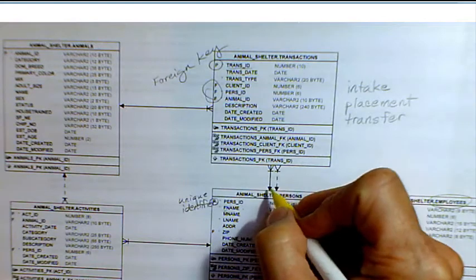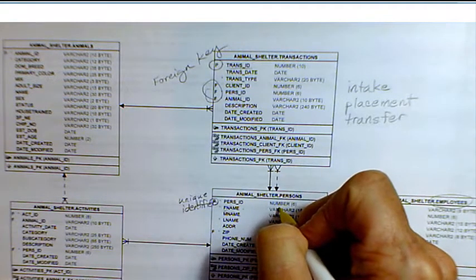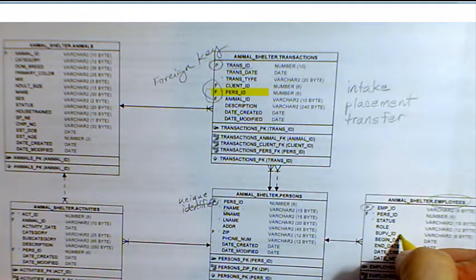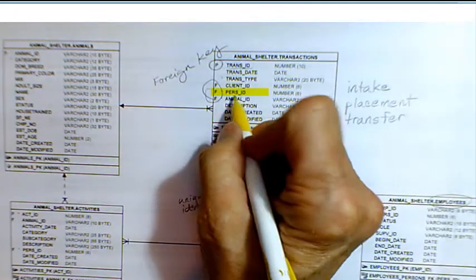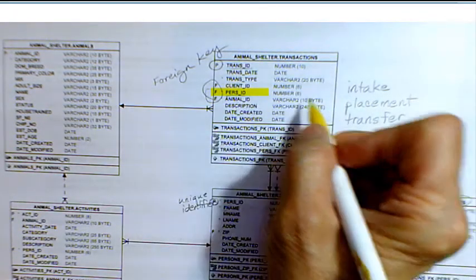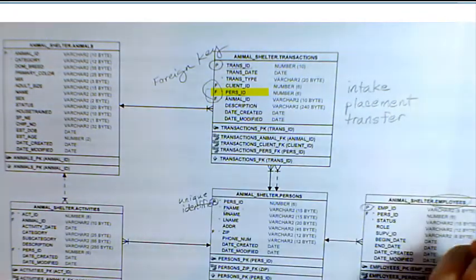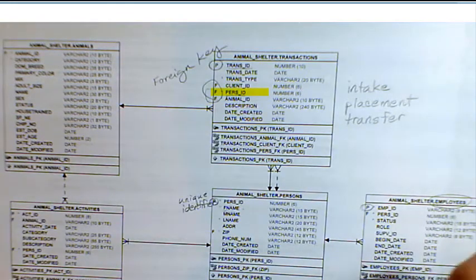If we look at the persons table, one of these persons, who's classified as an employee, is going to process this transaction. They'll be the one working and taking in the animal.